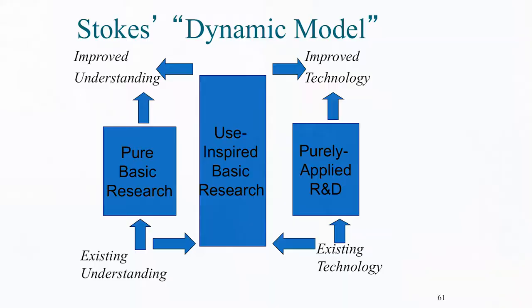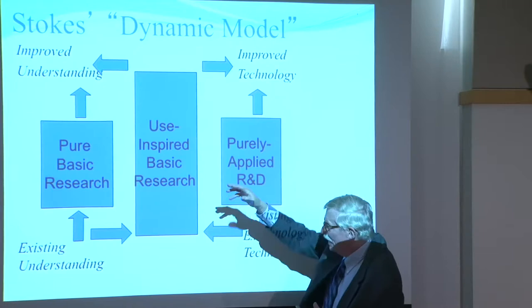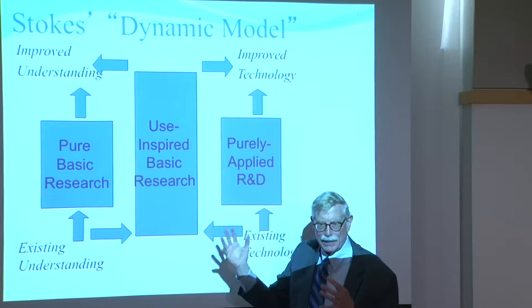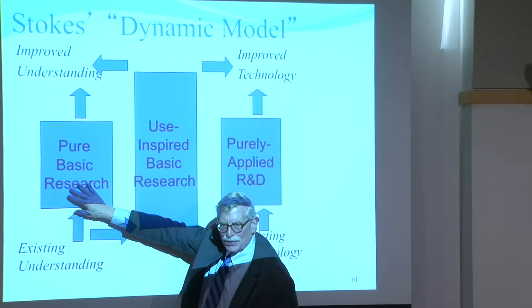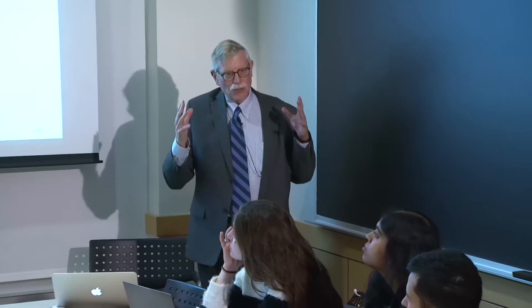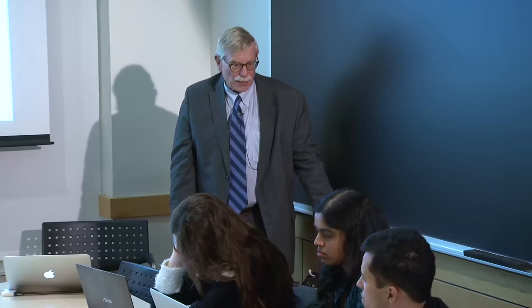Stokes's dynamic model shows that use-inspired research is the big one, then pure basic research, and then purely applied research. Everything's swirling around, but use-inspired research is right at the center. His critique of Vannevar Bush is: you're putting all your bets on pure basic research and you have to think about this as well. The fact that the US was doing great science and not making it drives him to these realizations about the fundamentals of how we've organized our science and technology system.